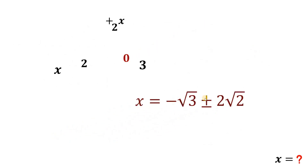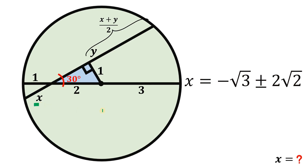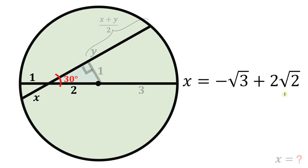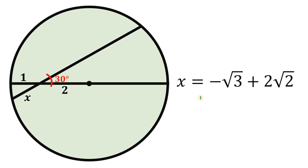Going back to our figure, take note that X here is a side length. Therefore, X cannot be a negative number. Thus, we disregard the negative value for X. Therefore, X is just negative square root of 3 plus 2 times square root of 2. And this is our answer to this question. Given this figure, the value of X is equivalent to negative square root of 3 plus 2 times square root of 2. And as always, we are done.